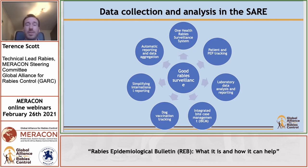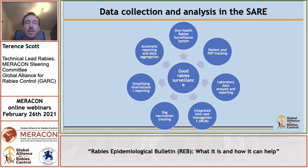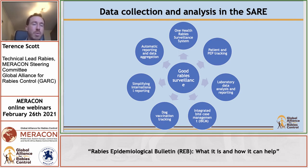This is a lot to address, but we have a system that can help you accomplish all of these activities bundled into a single system — the Rabies Epidemiological Bulletin. It is a web-based rabies surveillance system, meaning you don't need any special software. You can simply log in through the internet as you would with any other website. The system is designed to help countries improve their surveillance, data collection, and analysis.